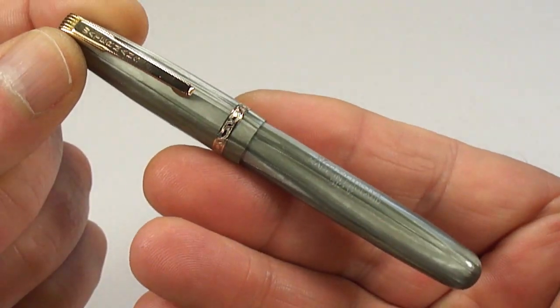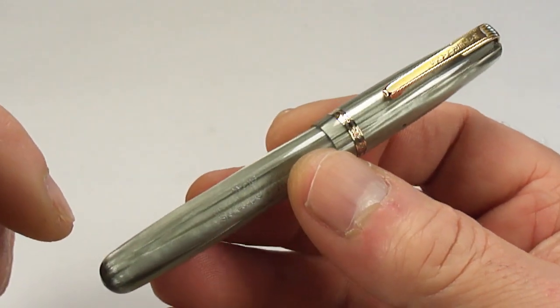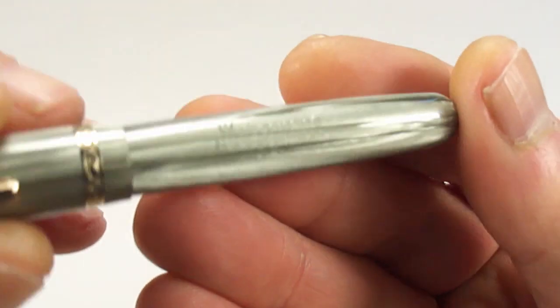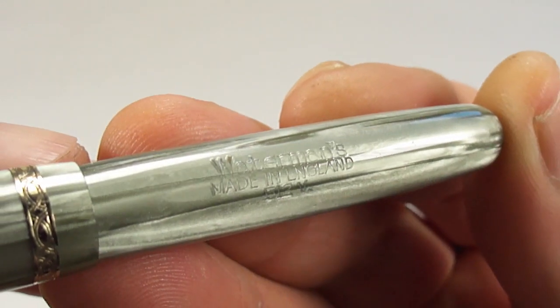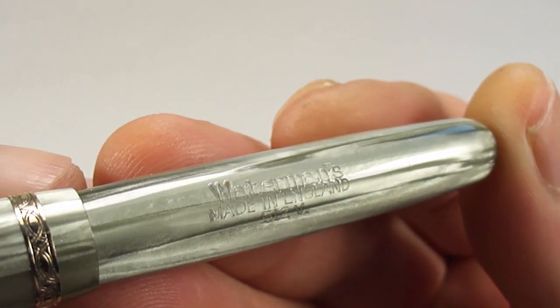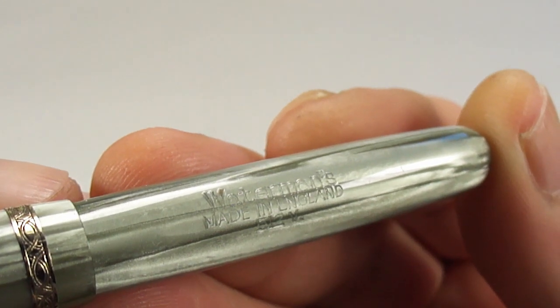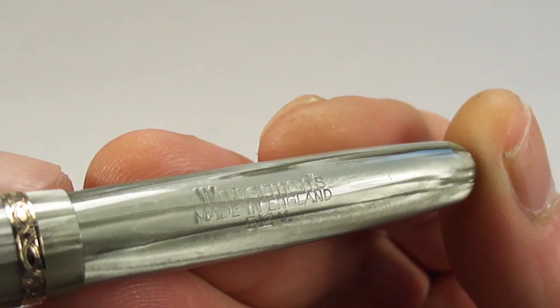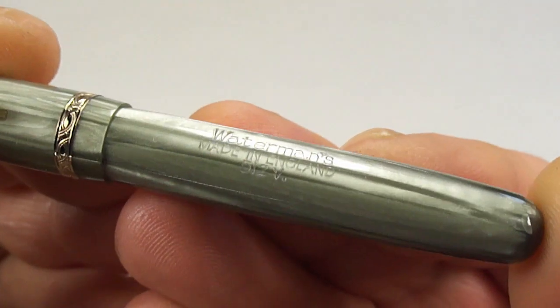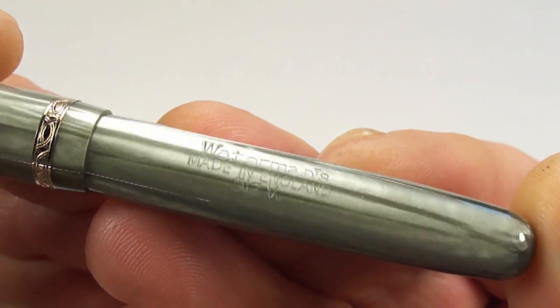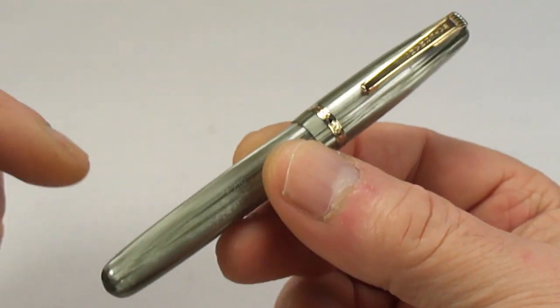Let's take you to the barrel imprint first of all. I'm hoping you can read there - it says Waterman's 512V made in England. A lovely clear imprint.